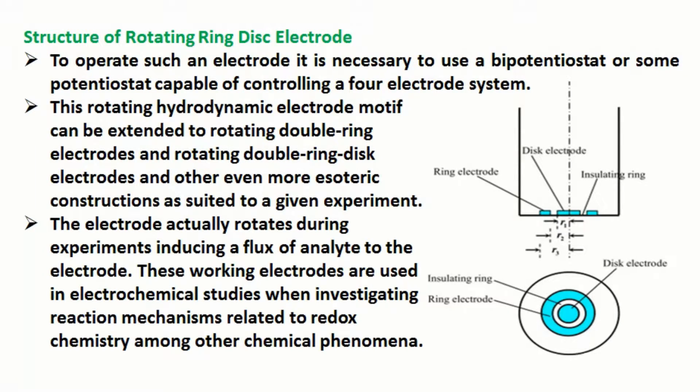This rotating hydrodynamic electrode motif can be extended to rotating double ring electrodes and rotating double ring disc electrodes and other even more esoteric constructions as suited to a given experiment. The electrode actually rotates during experiments inducing a flux of analyte to the electrode. These working electrodes are used in electrochemical studies when investigating reaction mechanisms related to redox chemistry among other chemical phenomena.